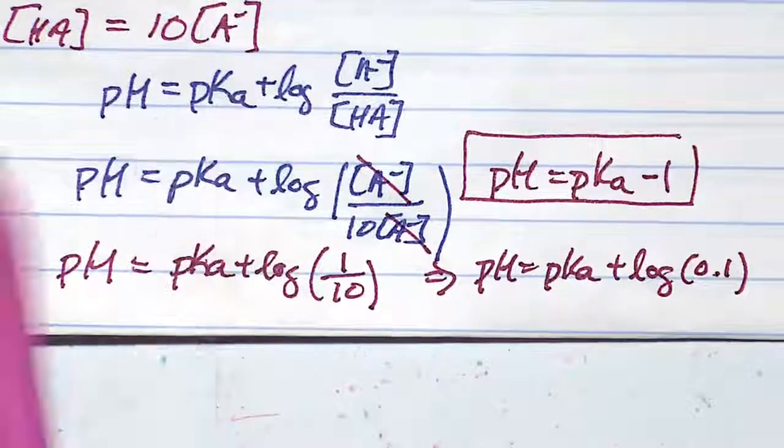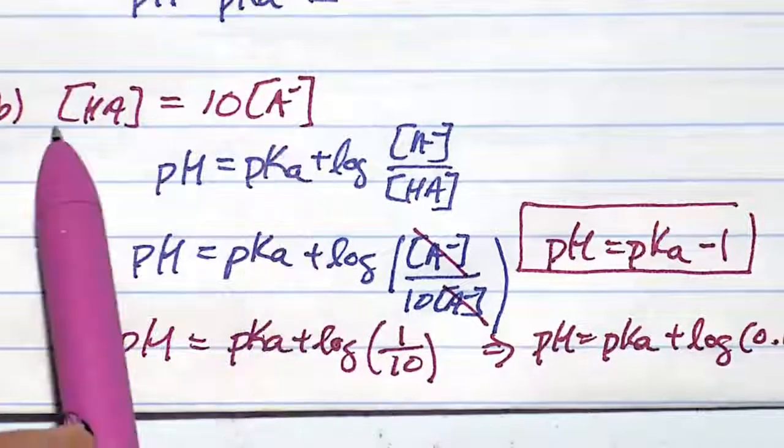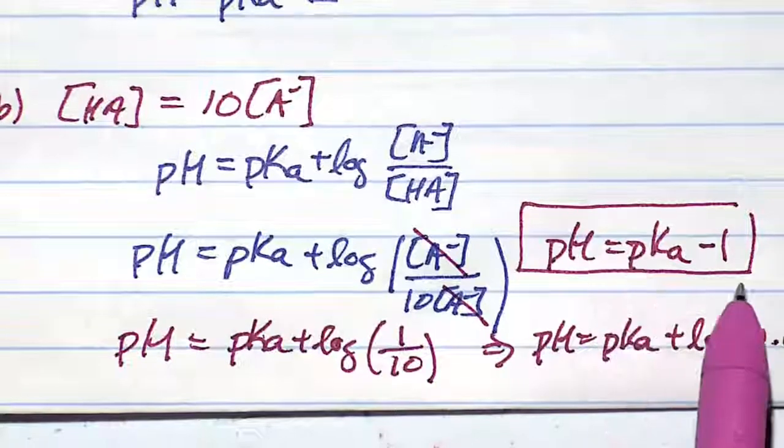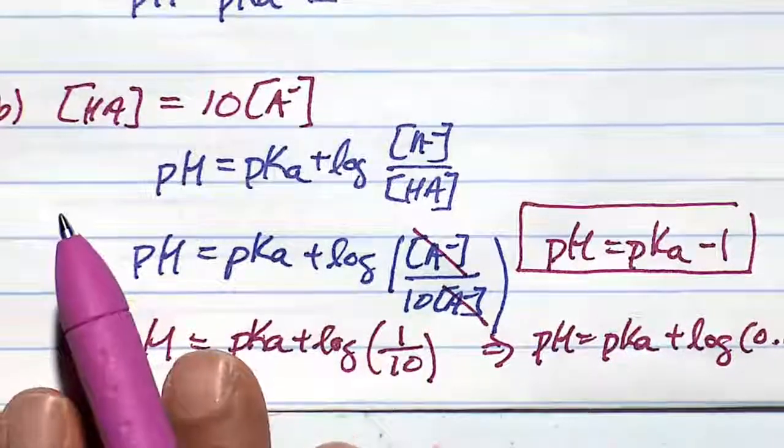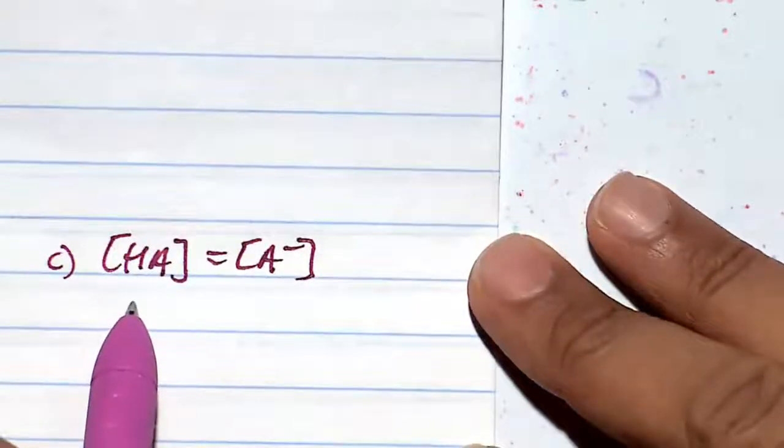In a situation where you have 10 times the amount of acid versus base, your pH unit only goes down by 1.